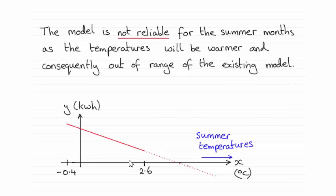I've drawn a sketch here—not that you need to do that—but basically what I've done is shown the regression model for the winter months, where the temperature range between minus 0.4 and 2.6 degrees Celsius.